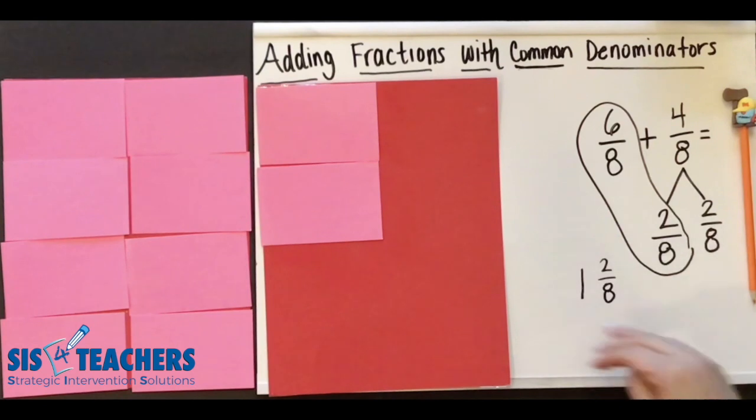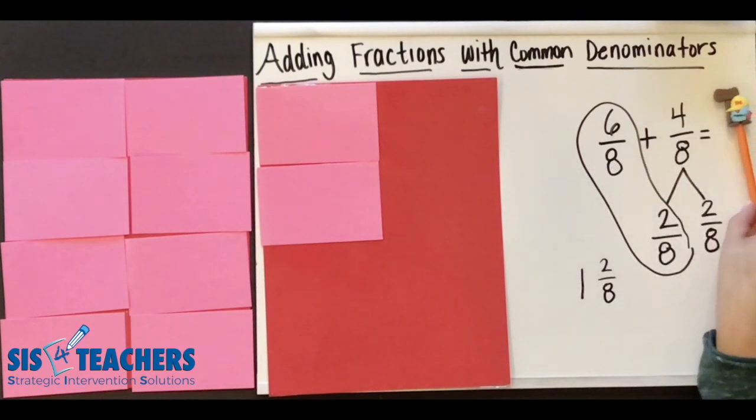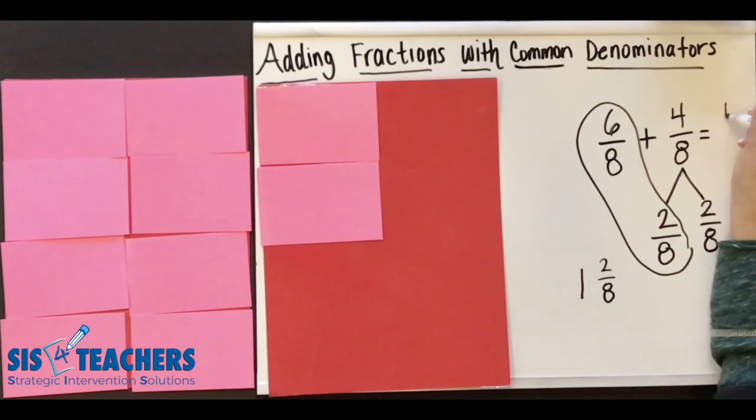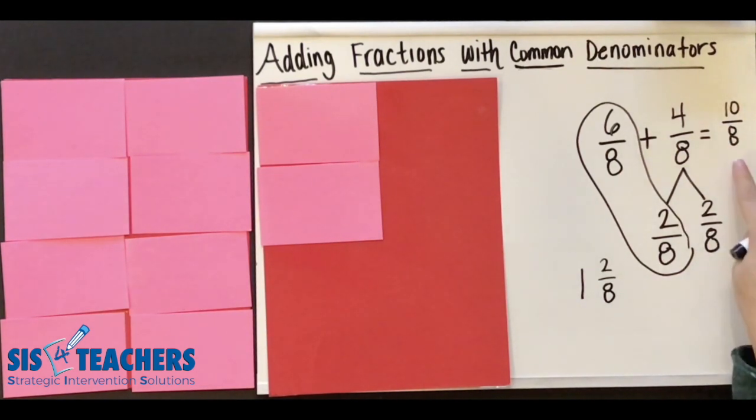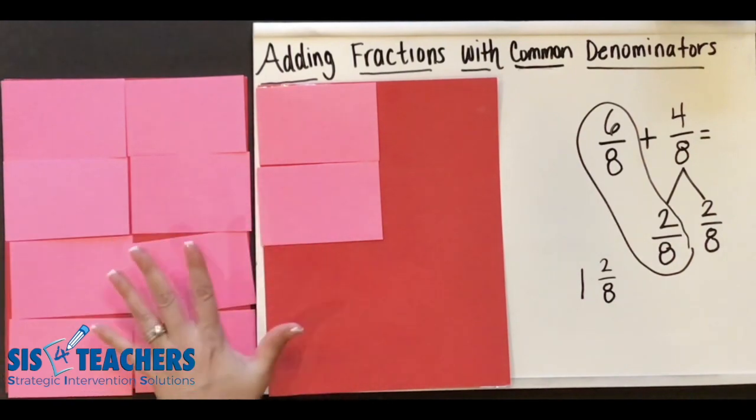I find this to be a lot simpler than trying to, even if you did understand going across and knowing that it's 10 eighths, you oftentimes end up with a fraction that's larger than one and then you have to do another step. I find that if you use our character DC, especially when you have common denominators, for students that don't understand this, they can look at it this way.